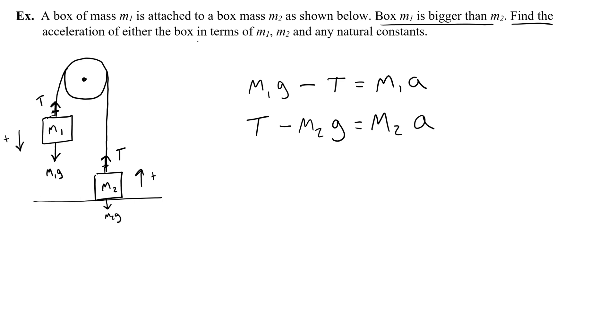Now it wants me to find the acceleration, which means I'm going to need to get rid of tension. And the way that I can do that is by adding the left and the right sides of the equations. So if I have the left sides together, the tensions cancel out and I get m1 G minus m2 G equals m1 A plus m2 A. So now I've got m1, I've got m2, natural constants, which means G, and acceleration. So I just need to get the acceleration by itself. The way that I do is I factor m1 and m2. And then I divide both sides by m1 plus m2.